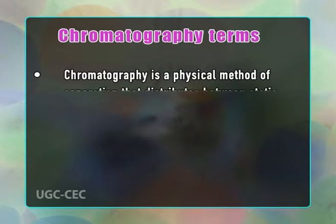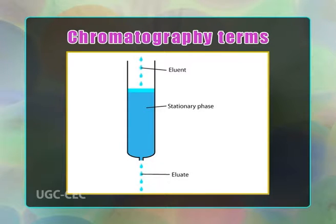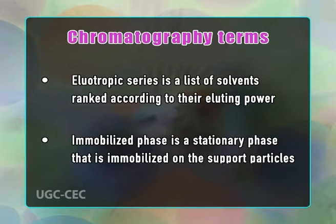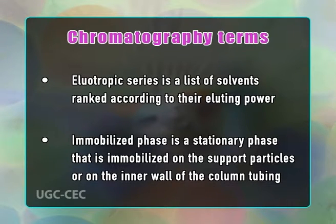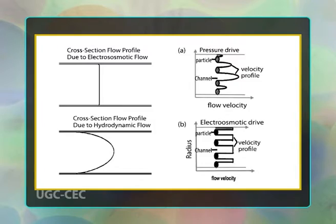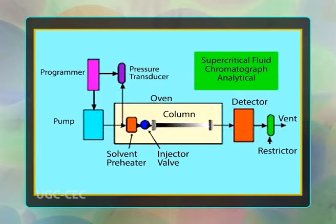Chromatography is a physical method of separation that distributes components between two phases: one stationary and one mobile, moving in a definite direction. The eluent is the solvent that carries the analyte. An eluotropic series is a list of solvents ranked according to their eluting power. An immobilized phase is a stationary phase immobilized on the support particle or on the inner wall of the column tubing. The mobile phase may be a liquid (LC and capillary electrochromatography CEC), a gas (GC), or a supercritical fluid (SFC).